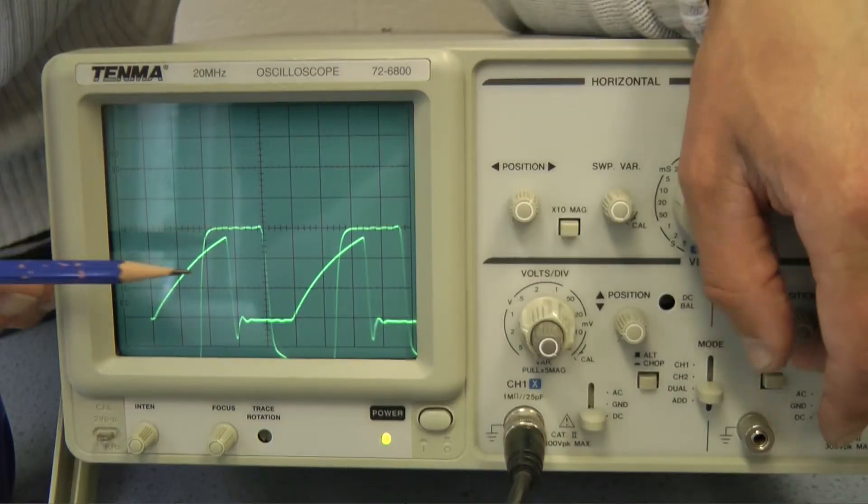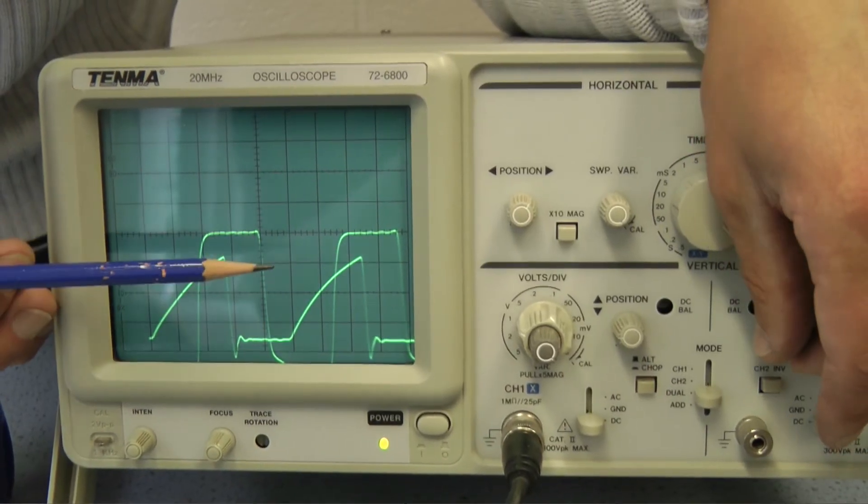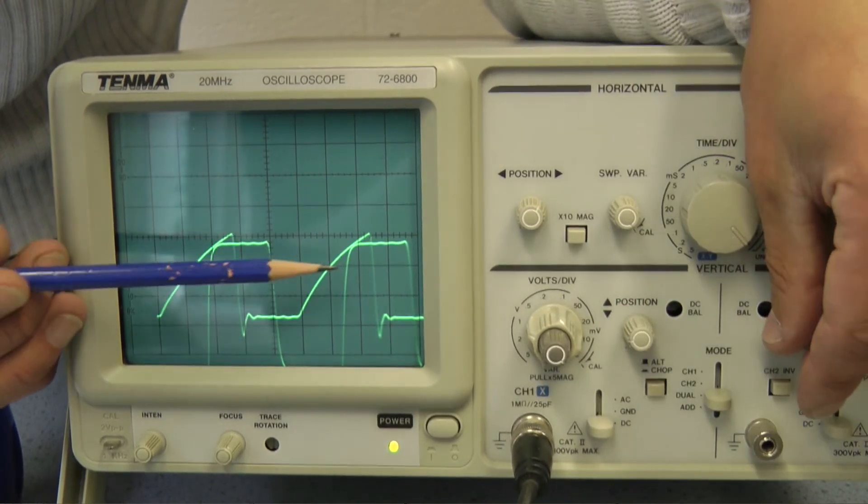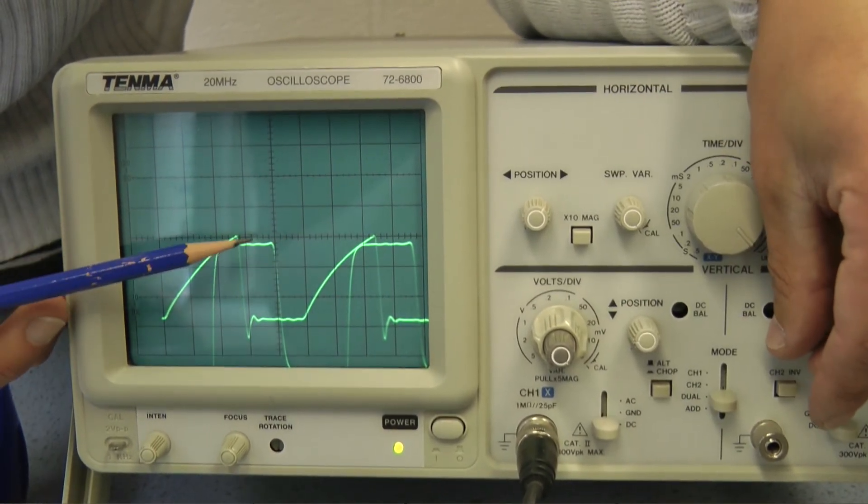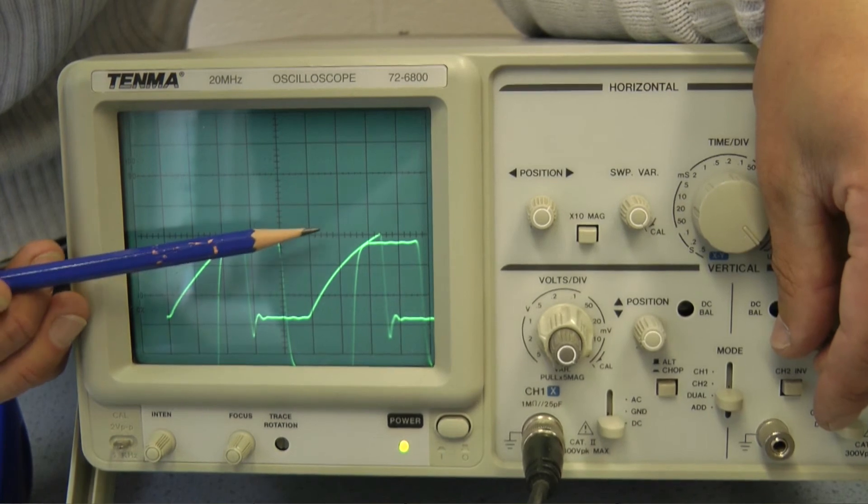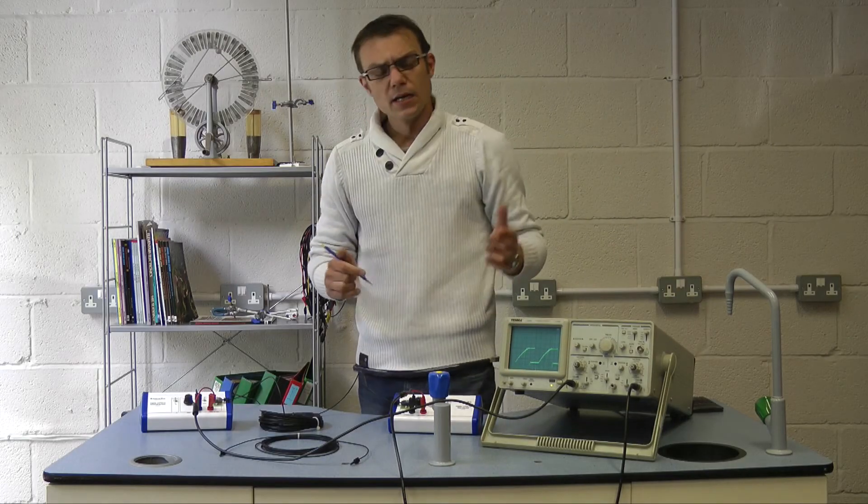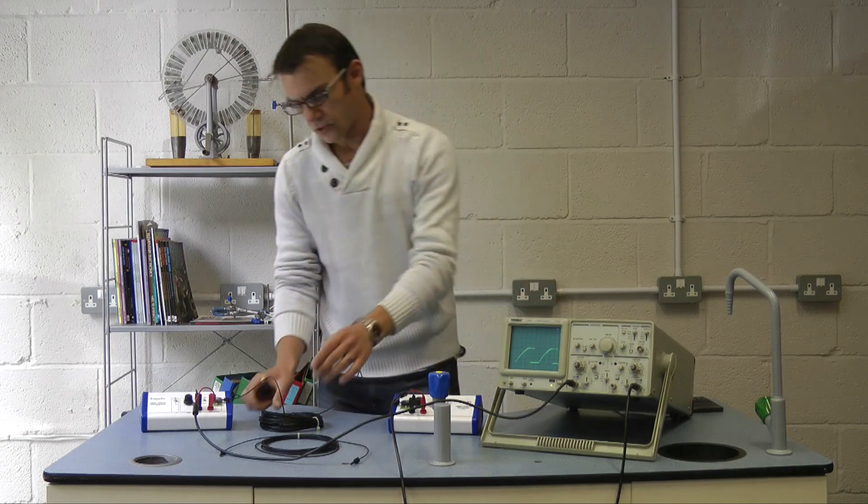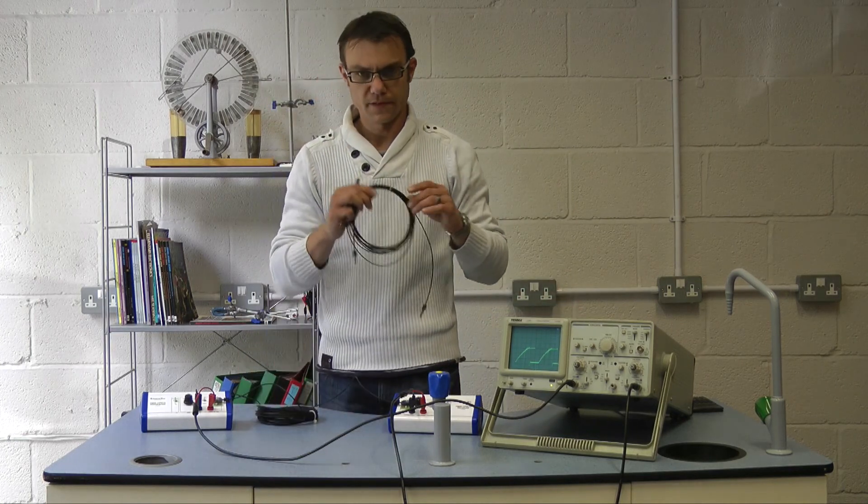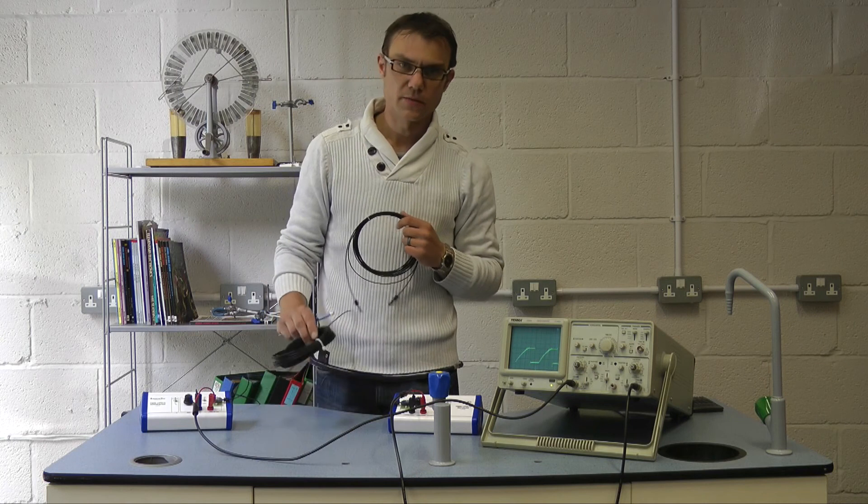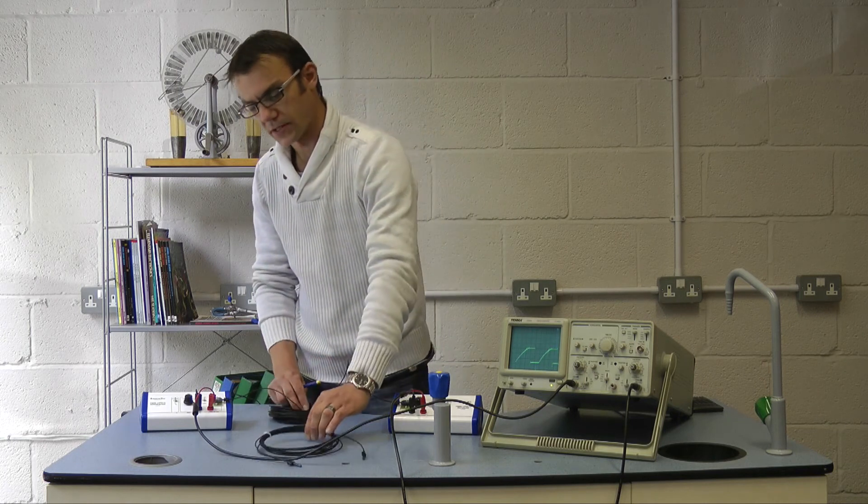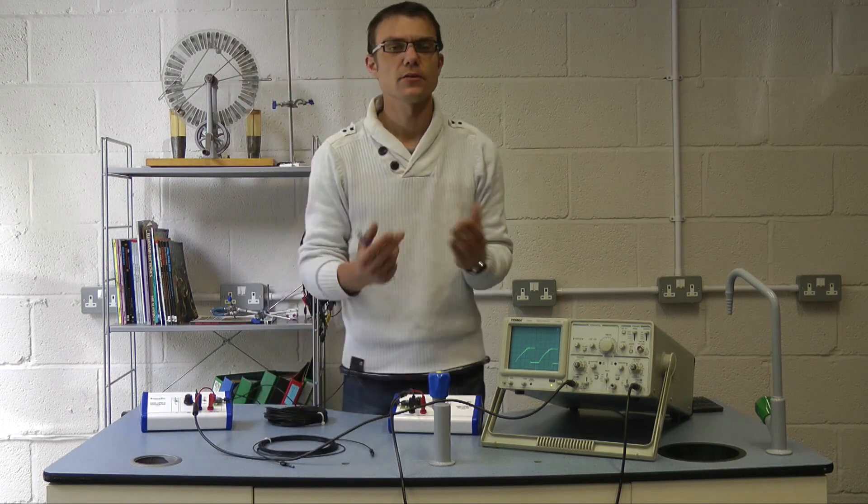Only now the distance between channel one, here, and channel two, here, has increased slightly. It's increased by 0.4 division, 0.4 times 0.2 microseconds. That increase must be due to the extra 15 meters, five meters in this one, 20 meters in this one. It's traveled an extra 15 meters, so that increase in time is solely down to the extra distance.